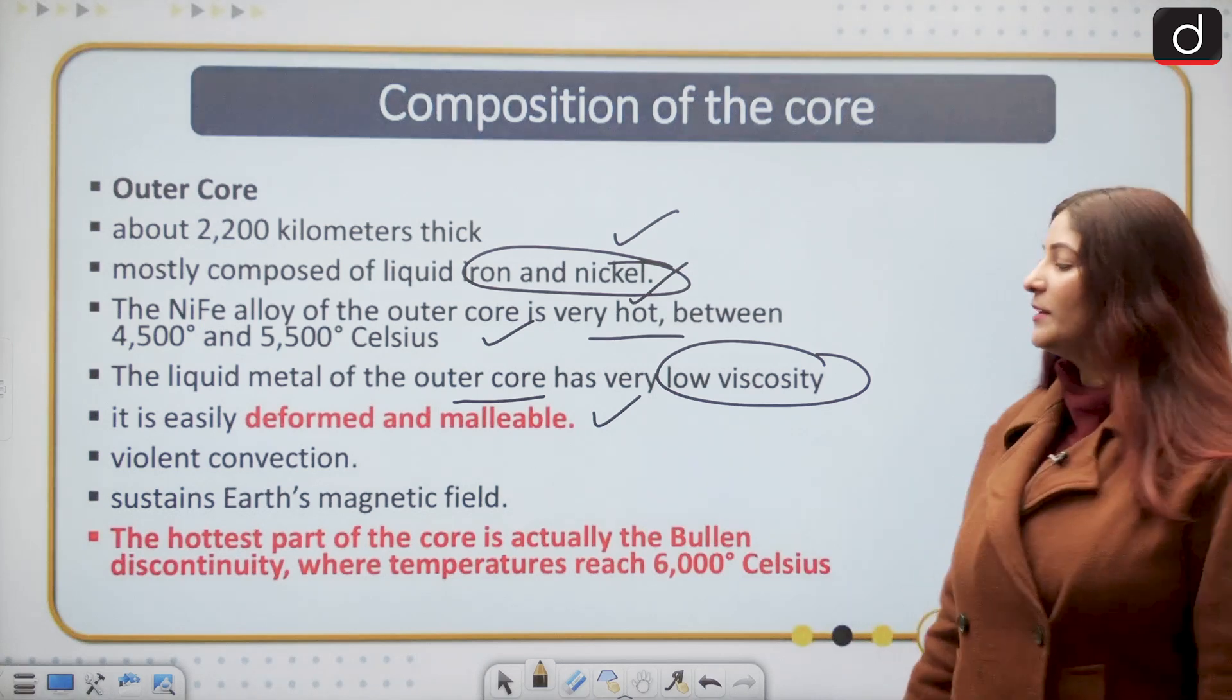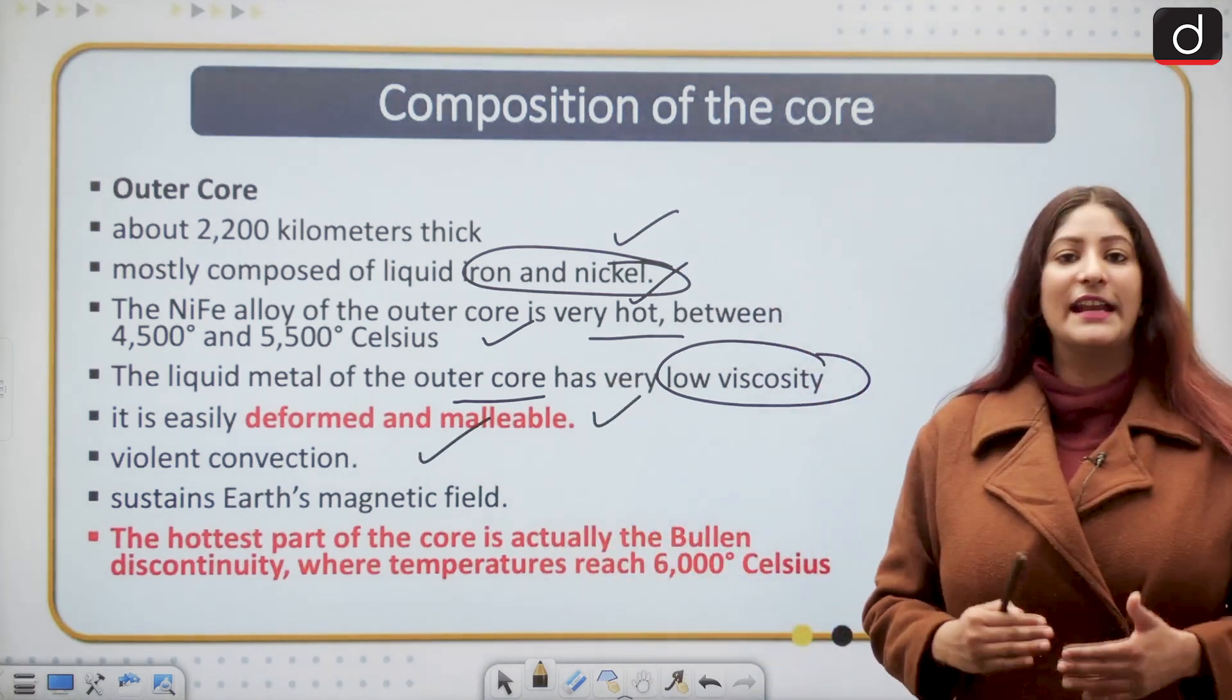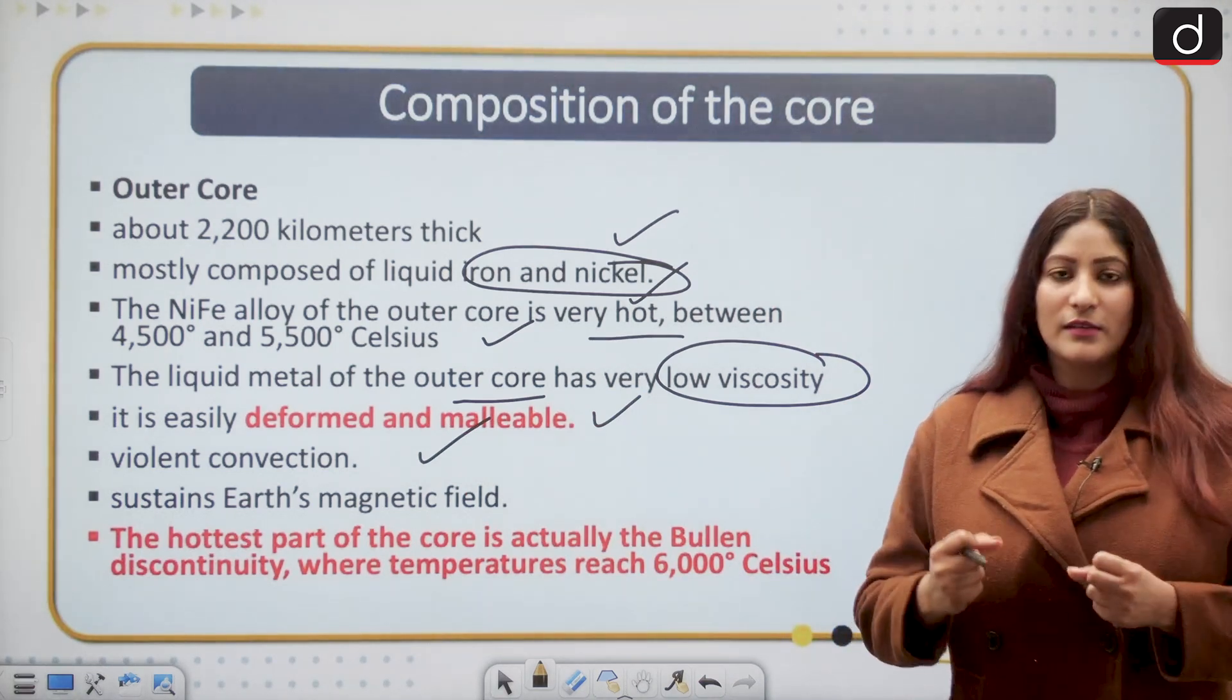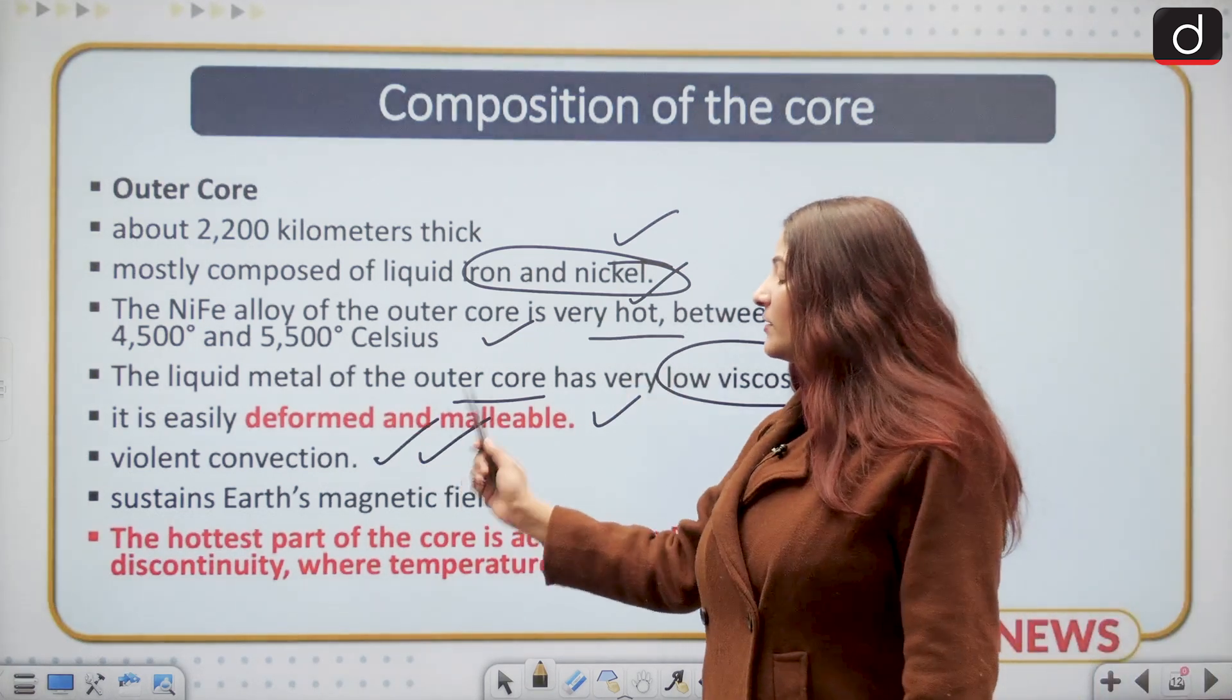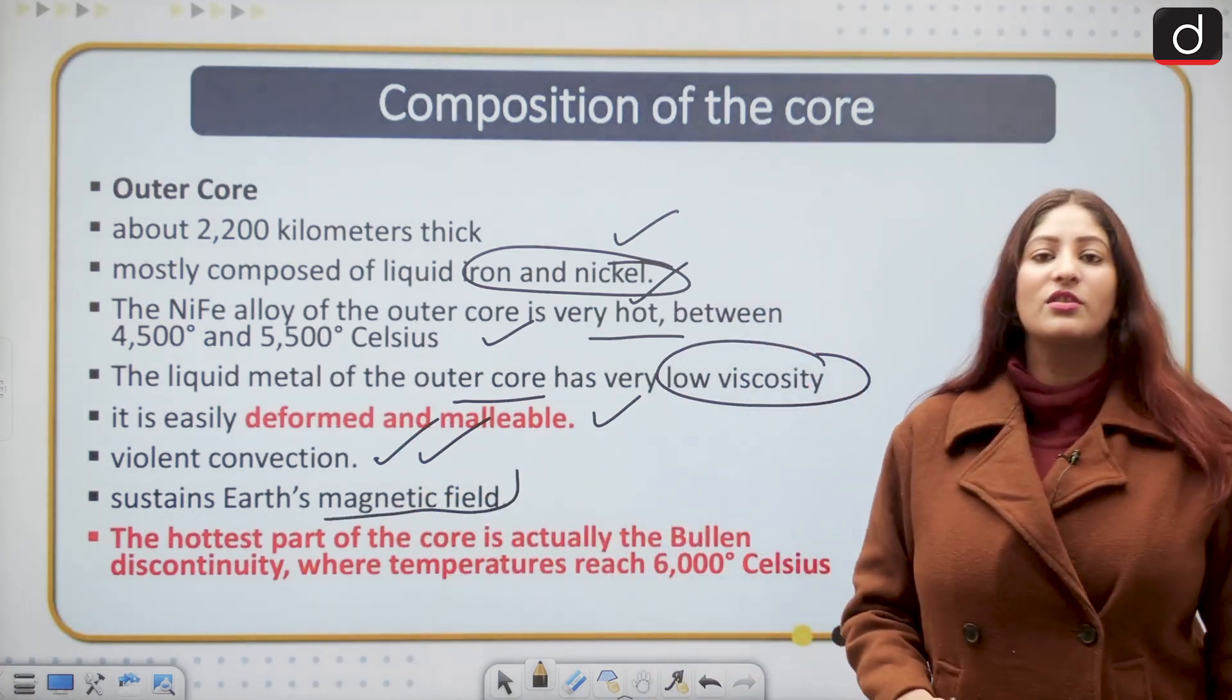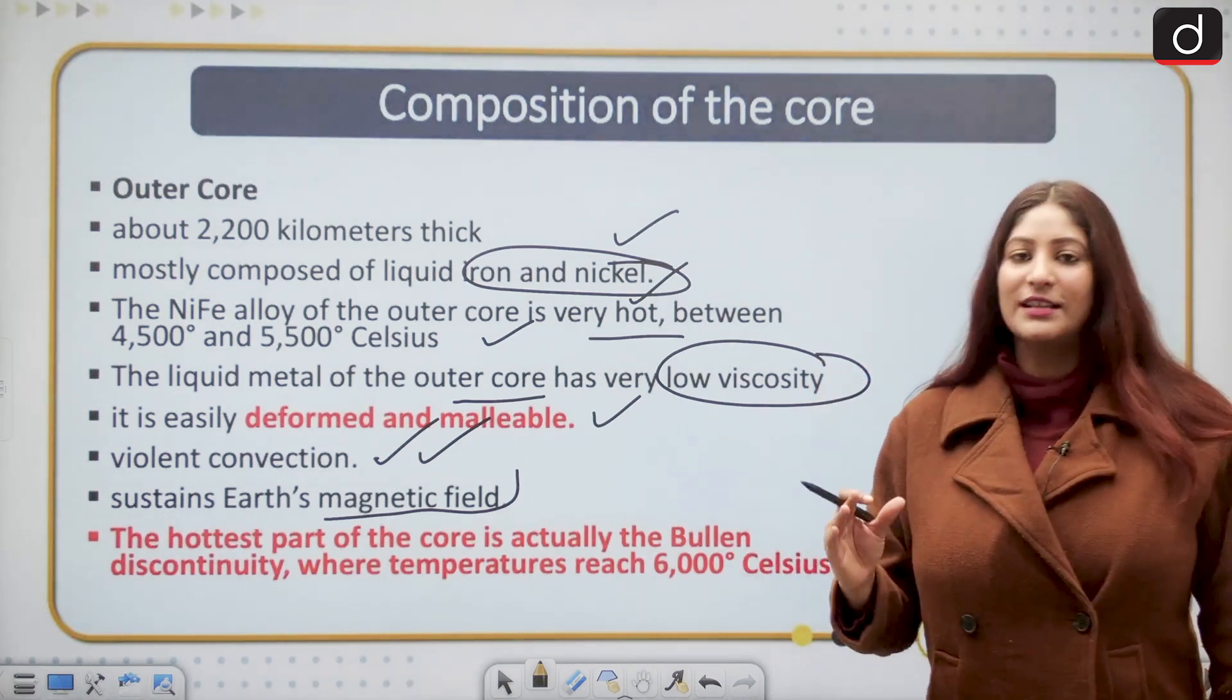What do you understand by malleable? Tell me in the comment segment. Because of the violent convection that is created by the collision and melting of different metals, there is violent convection in the outer core. Because of this violent convection, the magnetic field of the earth is sustained.